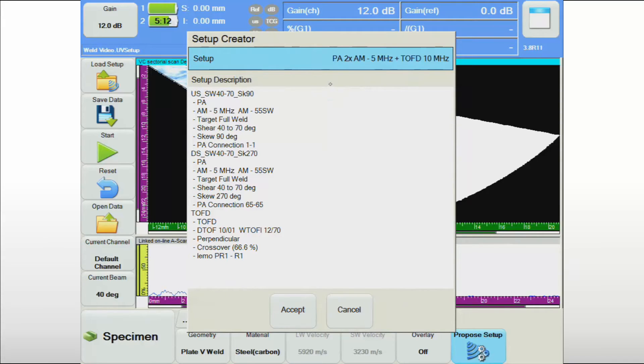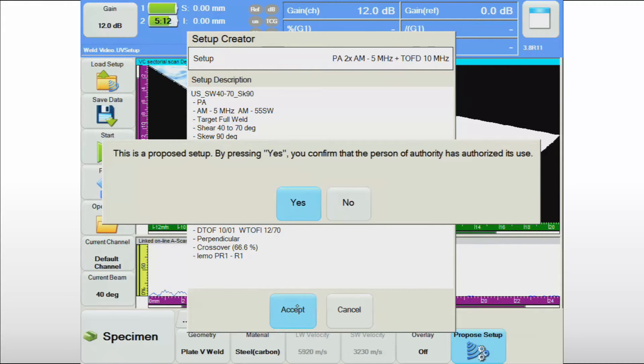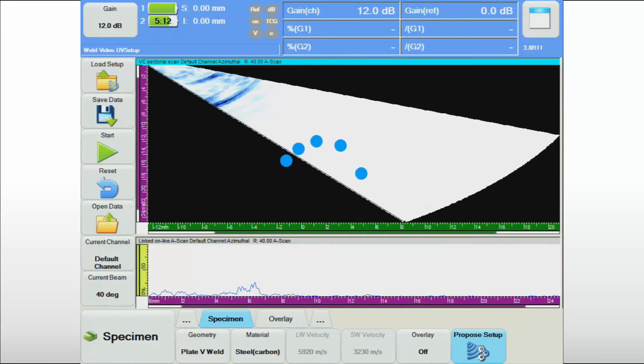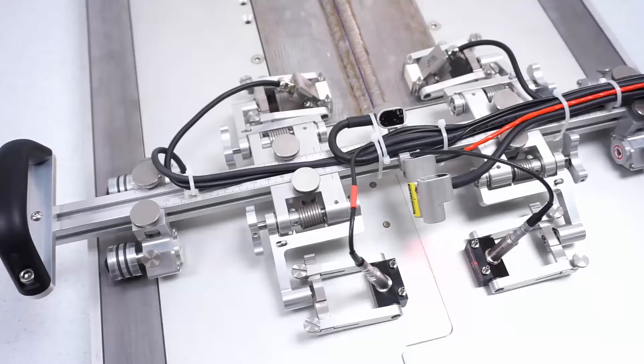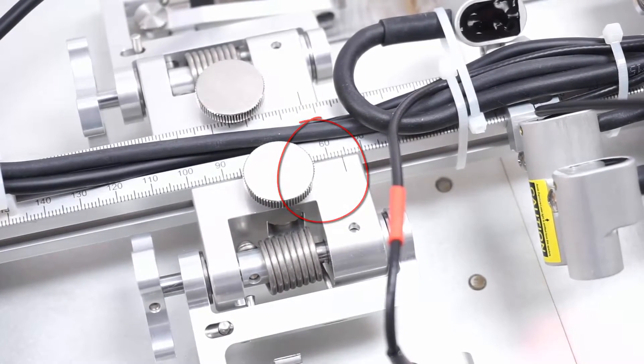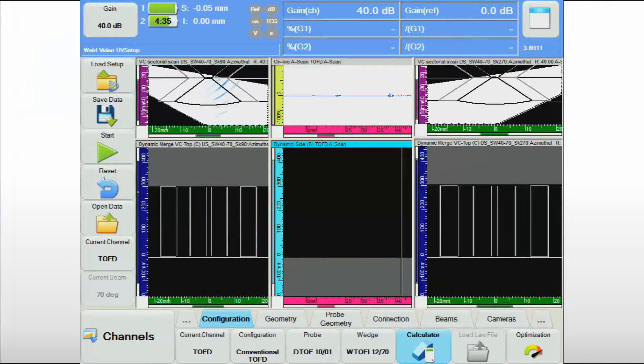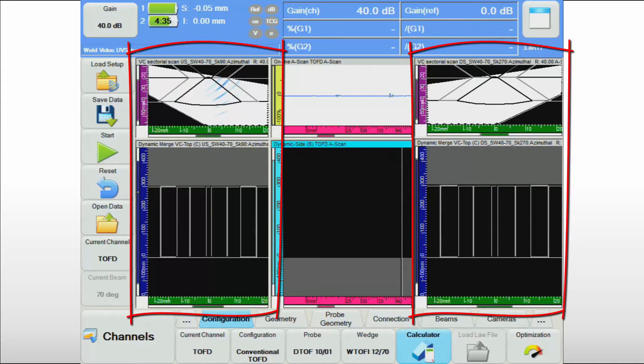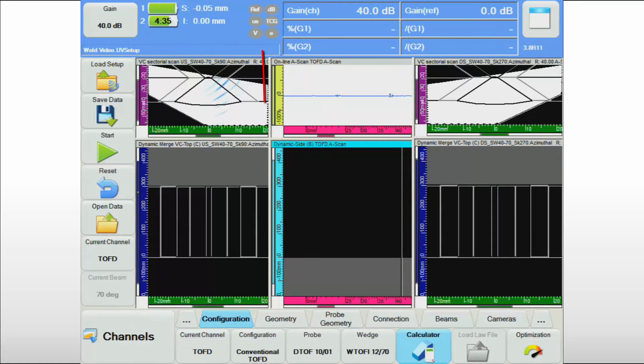Based on the geometry, the software will propose a code-compliant setup combining appropriate probes and wedges. As soon as the operator confirms his agreement with the proposed configuration, the software will indicate how to position each of the probe holders on the weld crawler. The basic UT parameters for the two PAUT and the TOFD channels will be automatically set at values that allow for optimum detection capability and complete coverage of the examination volume. The software will also create a practical display layout for the inspection, showing the PAUT channels on either side of the weld and the TOFD channel in the middle.